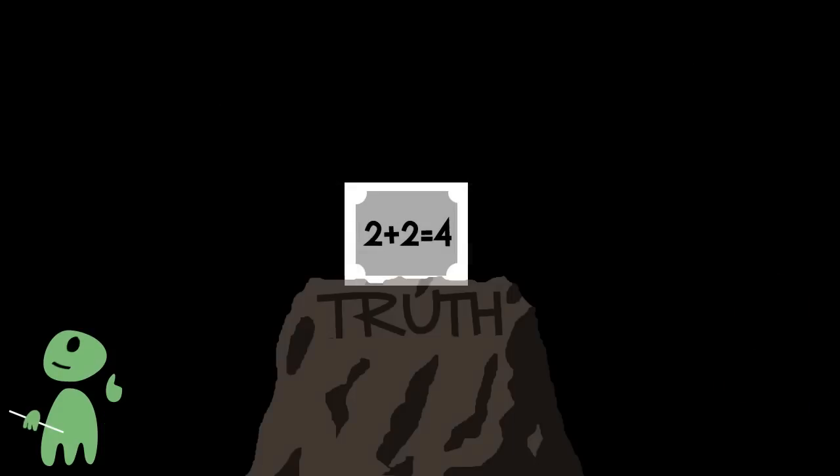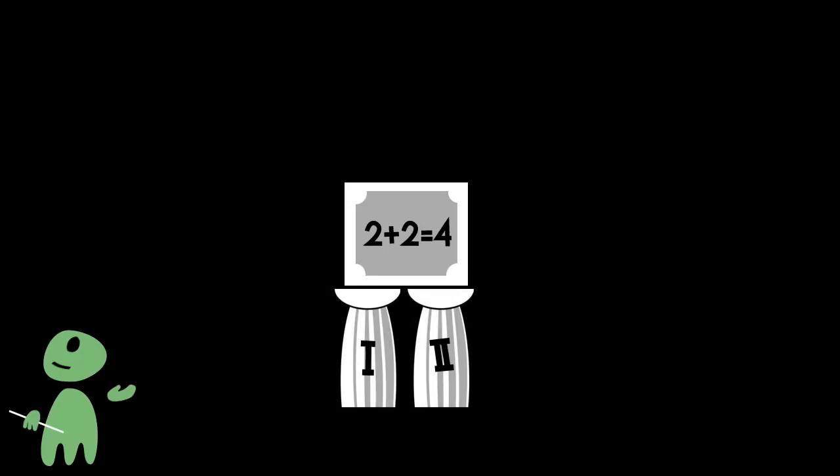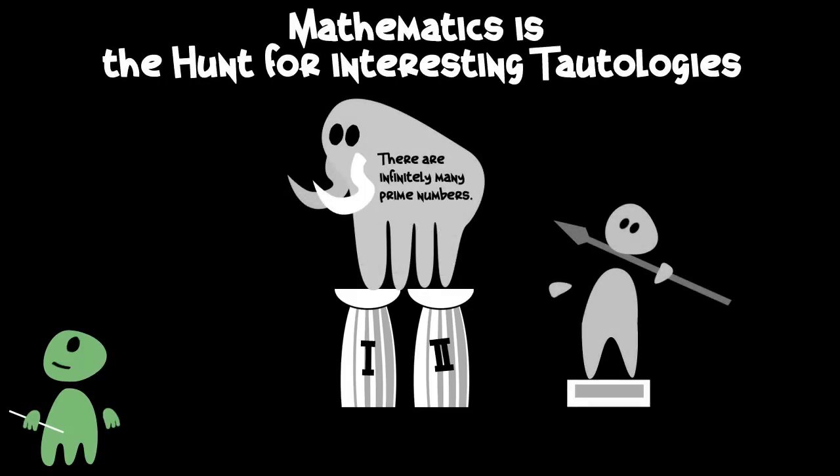Note that mathematics never says 'that is true', but rather 'given this and this, you can conclude that'. In other words, mathematical theorems are always true, because they are elaborate tautologies. One could define mathematics as hunt for interesting tautologies.